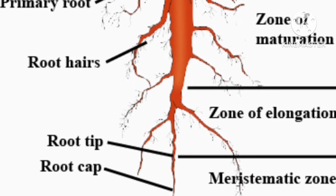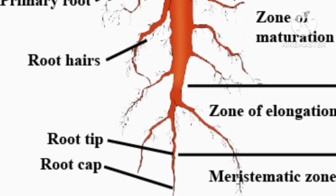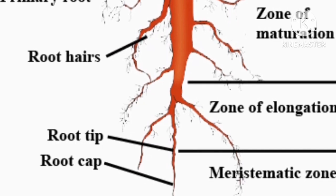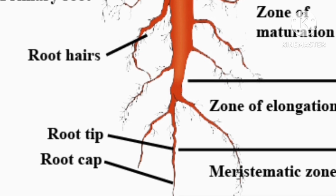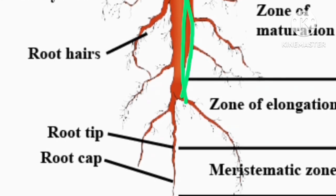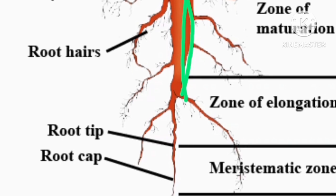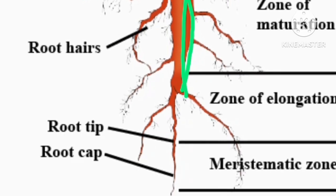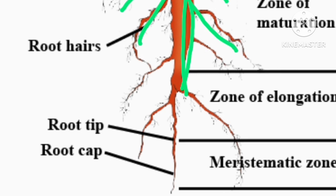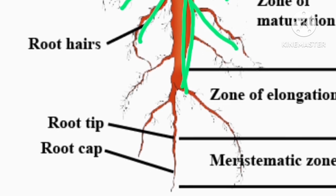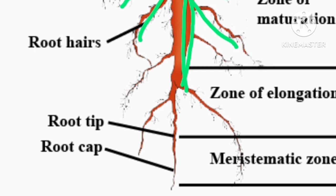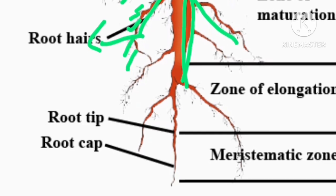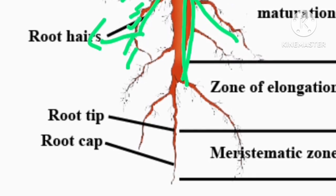The second diagram is taproot. The different parts of taproot: the first thick line is called main root, also called primary root. The side roots coming out from the main root are called lateral roots. The lateral roots have some hair-like structures called root hairs. At the bottom is the root tip and root cap.